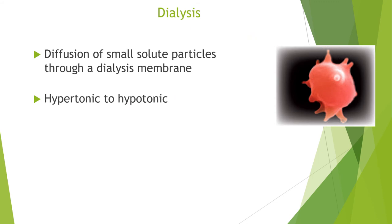Dialysis is the diffusion of small solute particles across a dialysis membrane. A dialysis membrane is a selectively permeable membrane that allows monoatomic ions, small molecules, and water to diffuse across, but does not allow colloids, large molecules, and large polyatomic ions to cross. Solute diffuses across the dialysis membrane from the hypertonic to the hypotonic solution until both solutions are isotonic. Dialysis allows small solutes to be separated from colloids — for example, kidney hemodialysis removes small ions and small molecules from the blood but does not remove proteins.